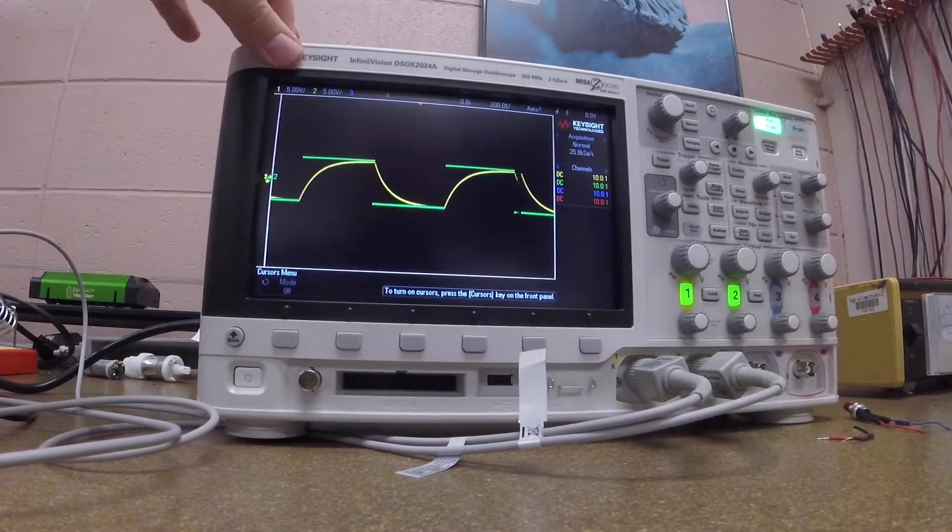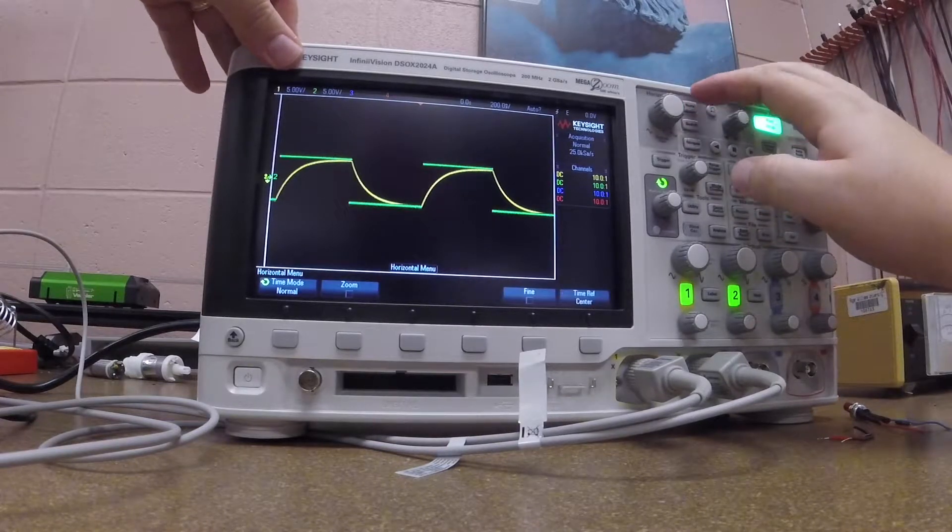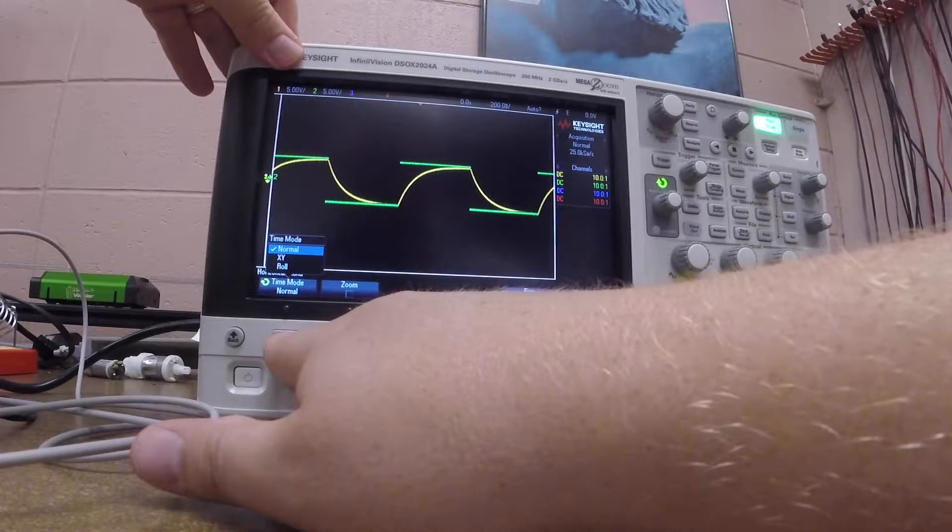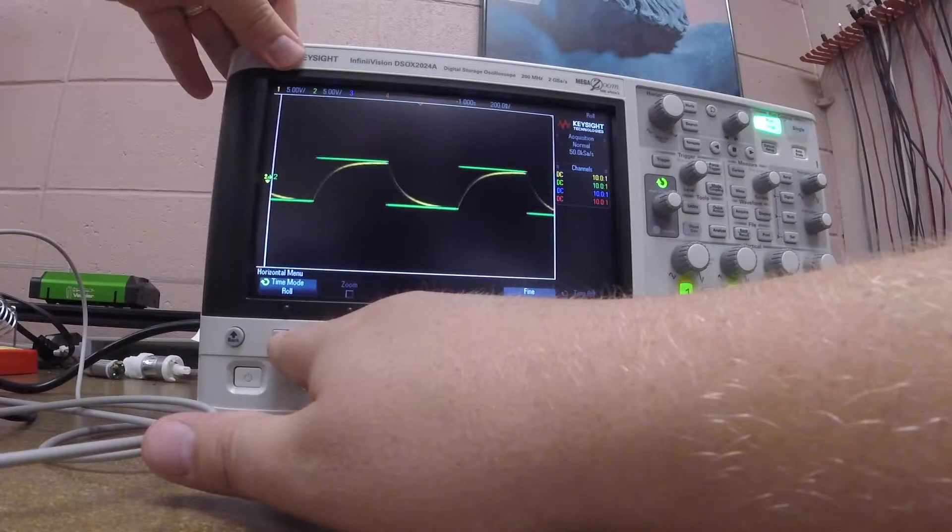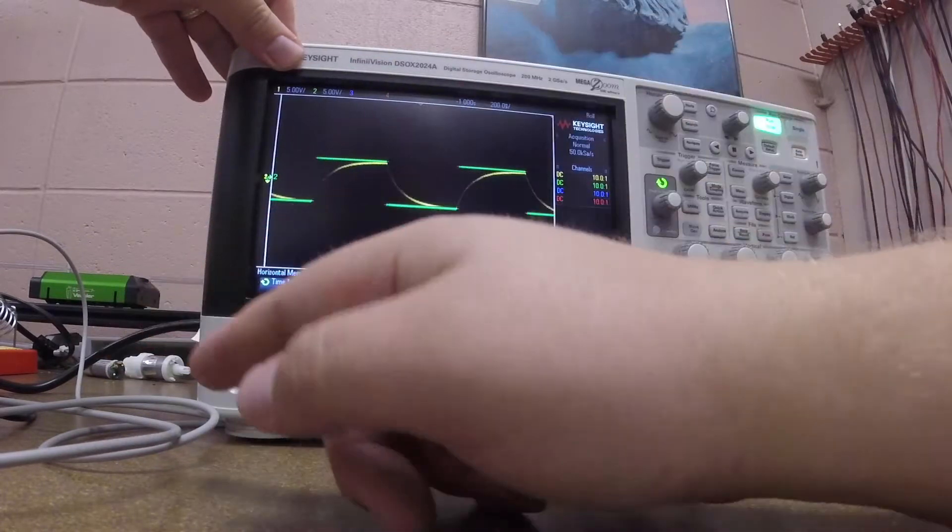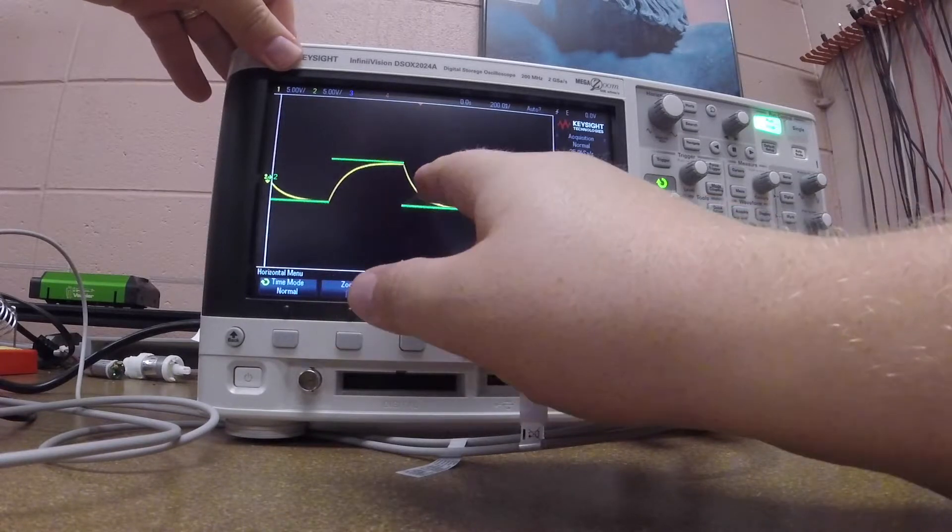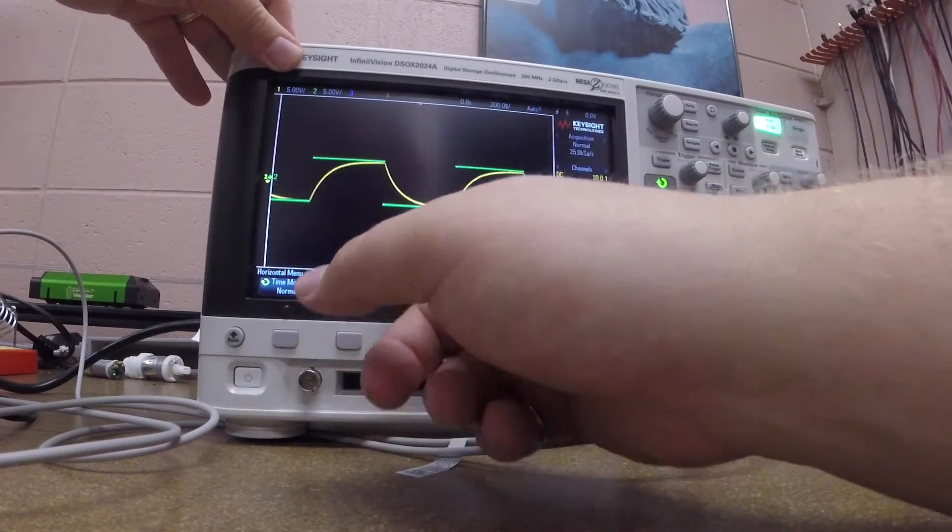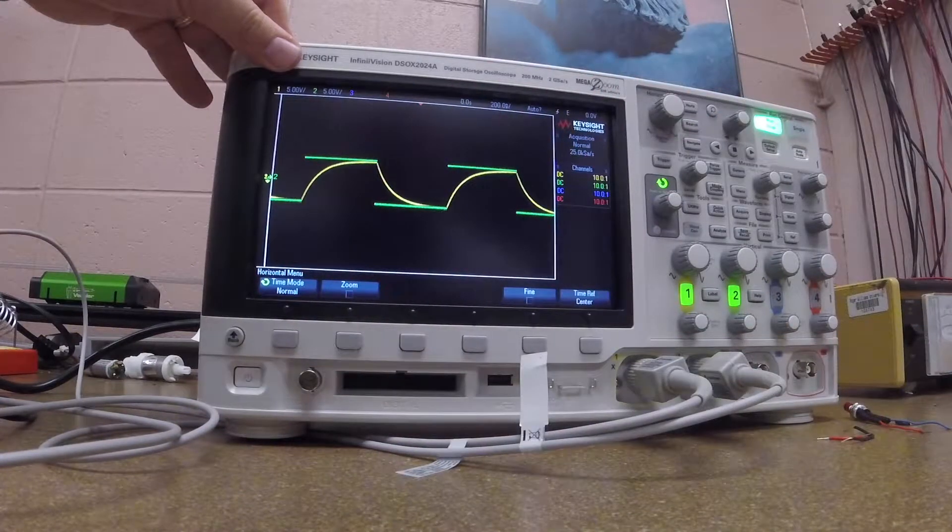Another thing that I might want to do is change the way that signals are displayed. If I click on this horizontal button up here, I can go to time mode normal. Right now it's on normal, but I could choose it to roll. What this does is it constantly rolls through and refreshes. The way that normal works is that it refreshes at the zero point every time, so there's some processing delay to make things happen.